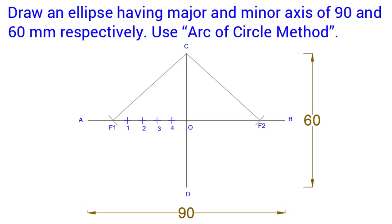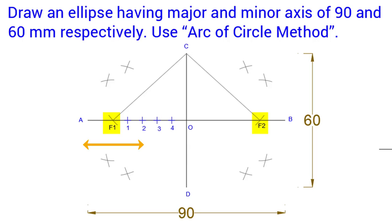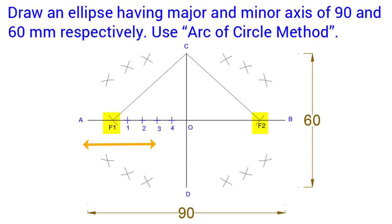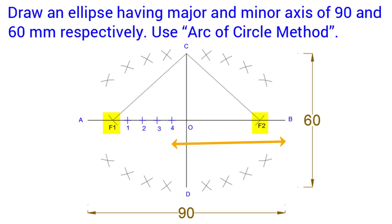Now, with the help of a compass, take distance AO as a radius and from points F1 and F2 draw arcs. Similarly, take the distance between successive division points from F1 and F2 and draw corresponding arcs to locate additional points on the ellipse.